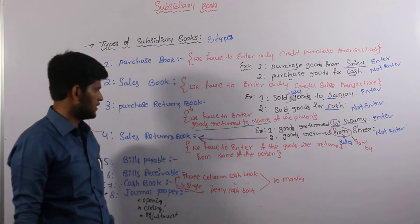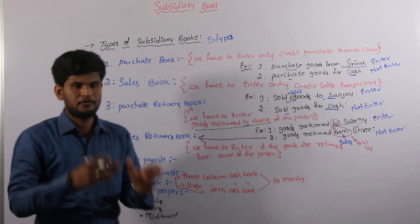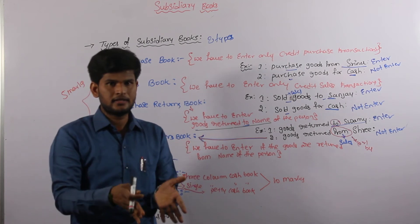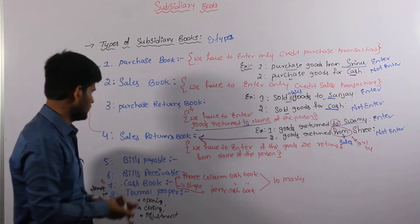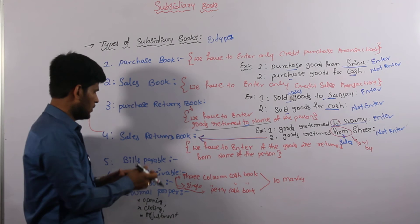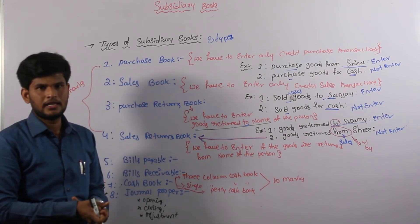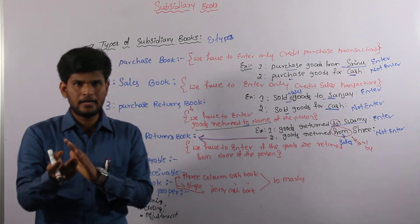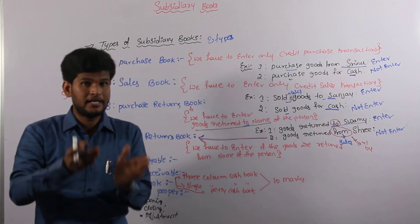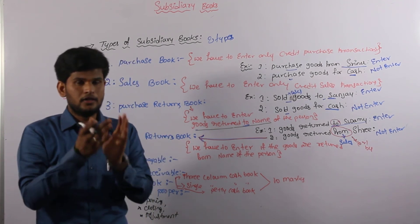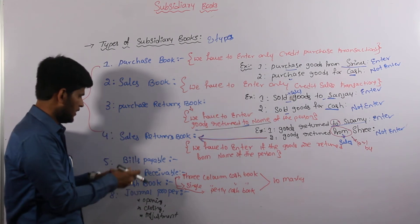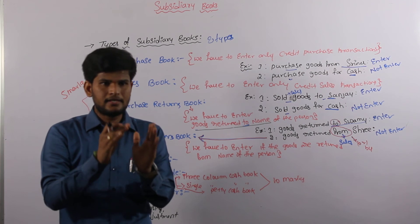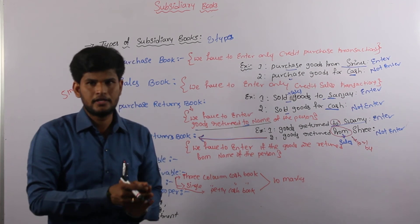Next is sales return book — sales return is nothing but if the goods are returned. If 'from' is there or if 'by' is there, those transactions we have to convert into sales return. According to bills payable: bills payable is nothing but the amount responsible to the credit system — how much amount we are paying or owing. Those transactions we have to identify. And bills receivable: bills receivable is nothing but the payment receivable to the organization.